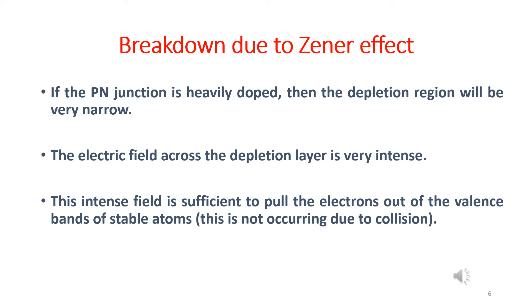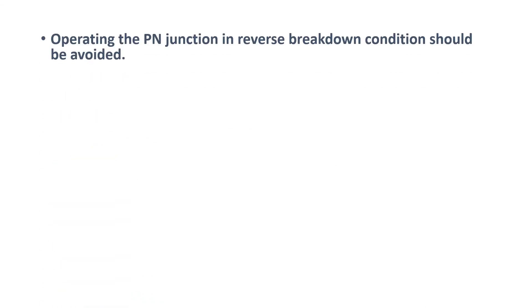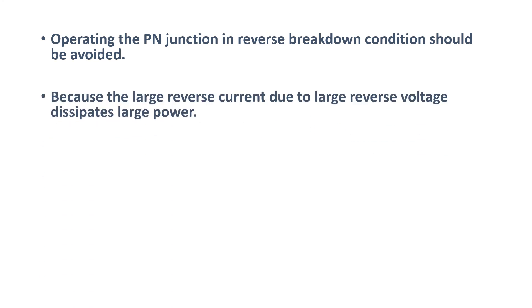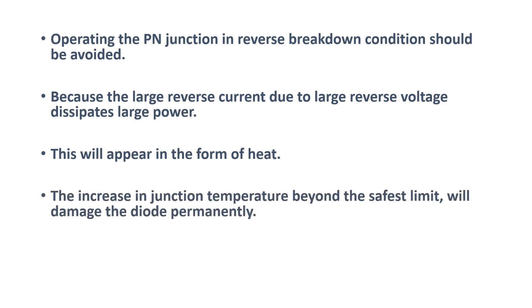The normal p-n junction diode is practically not operated in the reverse breakdown region, though it may be operated in reverse biased condition. The breakdown effects are not required to be considered for p-n junction diodes. These effects are required to be considered for special diodes such as Zener diodes, which are always operated in reverse breakdown condition. Operating the p-n junction in reverse breakdown condition should be avoided, because the large reverse current due to large reverse voltage dissipates large power, which will appear in the form of heat. The increase in junction temperature beyond the safest limit will damage the diode permanently. Some special diodes are manufactured to be operated in the reverse breakdown region and are called Zener diodes.